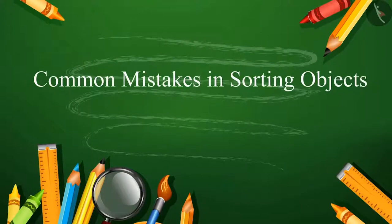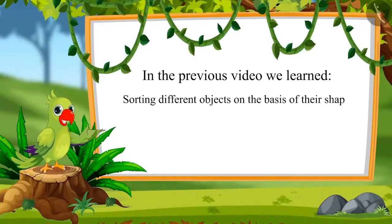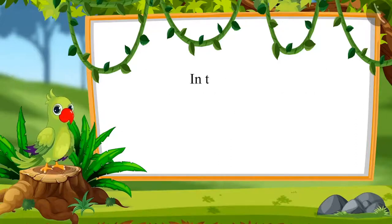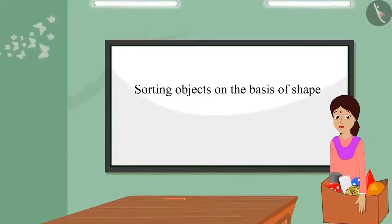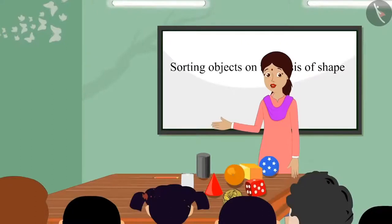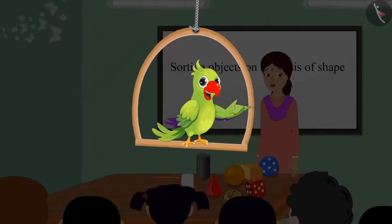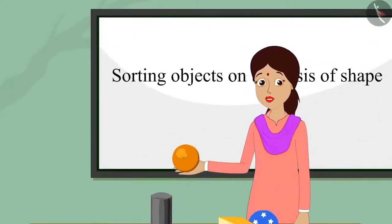Common Mistakes in Sorting Objects. So children, in the previous video, we learned sorting different objects on the basis of their shape. In this video, we will see some common mistakes in sorting objects. Today, Chotu's teacher has brought some objects to the class. Children, look — I have brought some objects with me. Can you identify them? The teacher shows an object and asks: Children, can you identify which shape this object resembles?